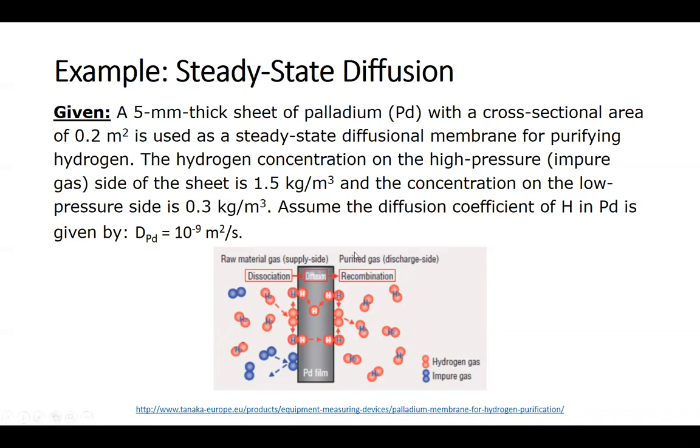What you see here is on the left-hand side impure hydrogen, and it contacts this palladium film. There's a dissociation of the hydrogen with whatever impure gases it's associated with, a diffusion of the hydrogen through the palladium film, and then a recombination of the hydrogen on the other side.